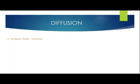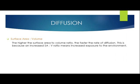Other factors include the surface area to volume ratio. The higher the surface area to volume ratio, the faster the rate of diffusion. This is because an increased surface area to volume ratio means increased exposure to the environment, meaning the particle or molecule will be exposed to the medium in which it will be diffusing.